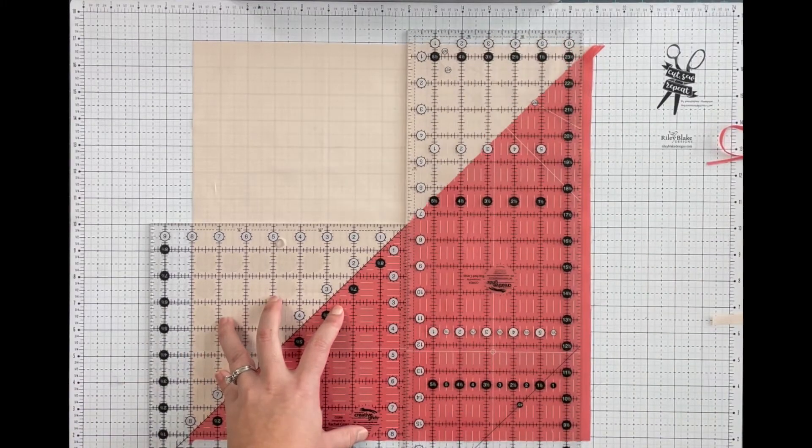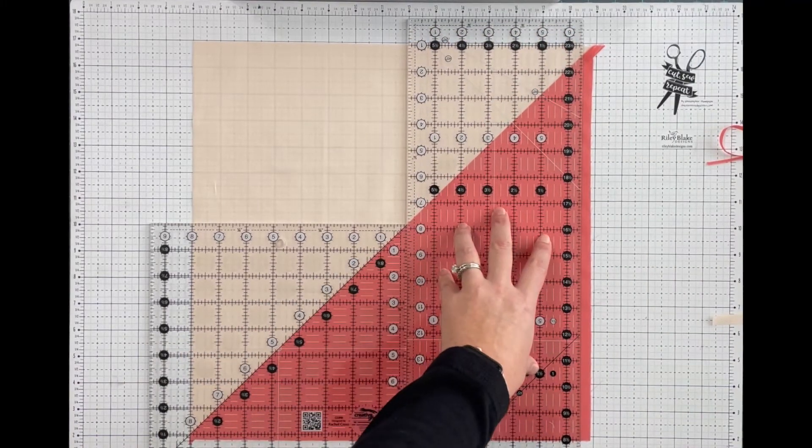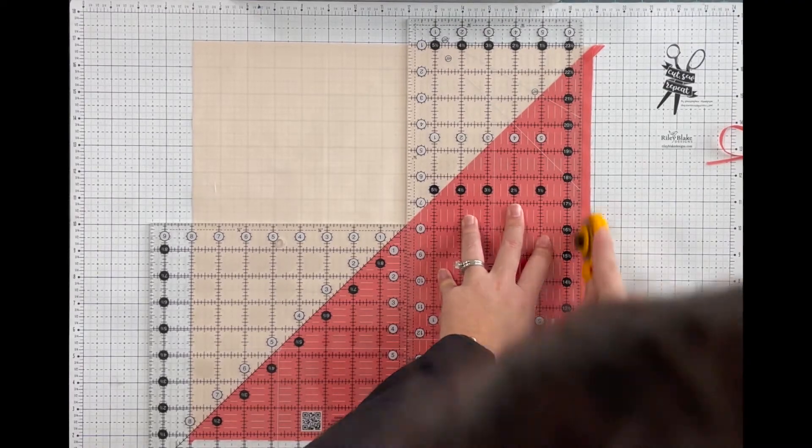Then I lay my longer ruler flush and trim this right edge.